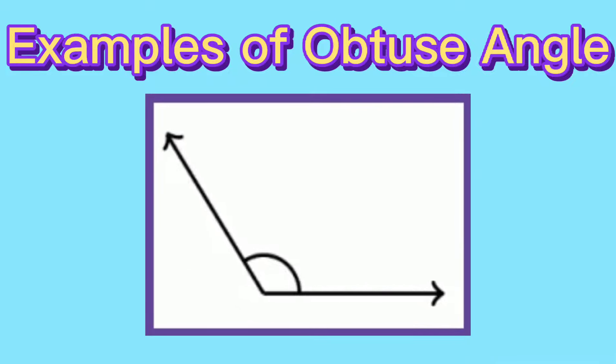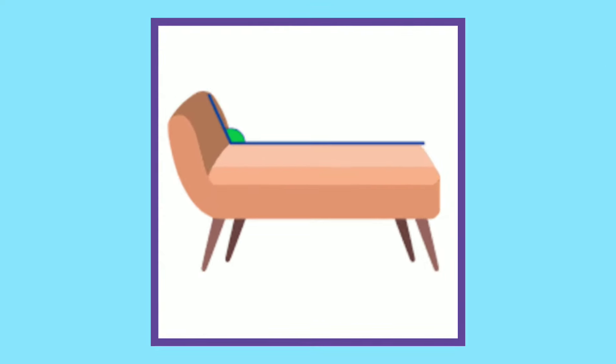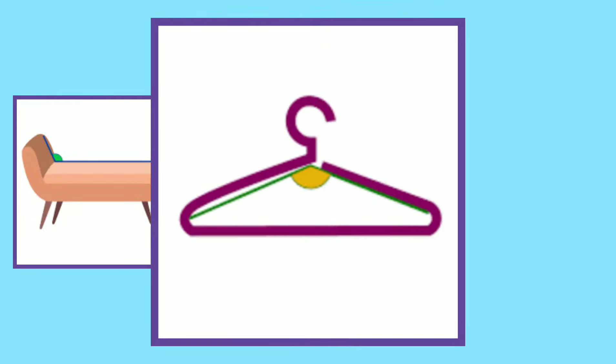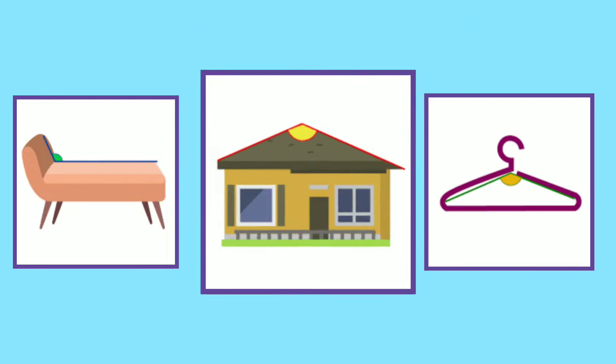Let's now have these examples of obtuse angle represented by the following figures. A sofa, a hanger, and the roof of a house.